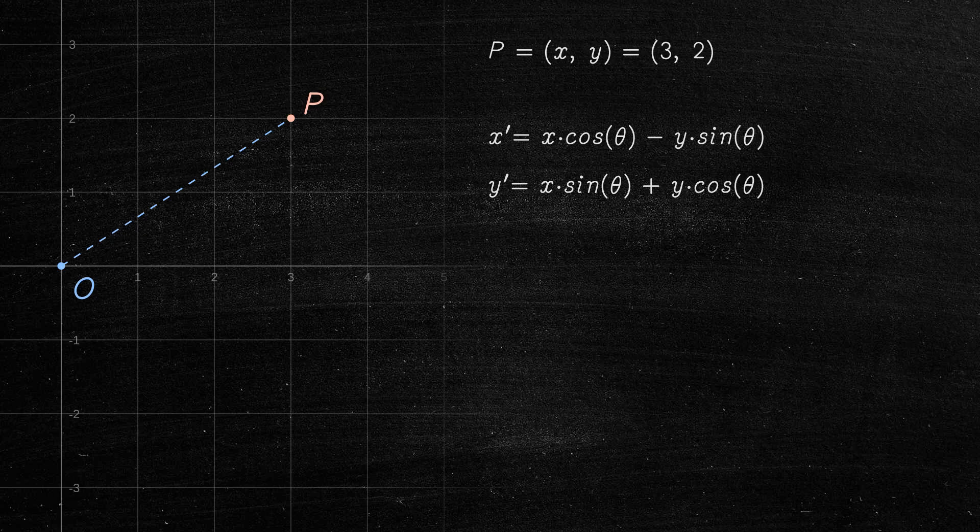X' and Y' are the coordinates of the rotated point. X and Y are the coordinates of the original point. Theta is the angle of rotation measured counterclockwise, in radians.